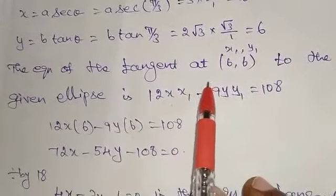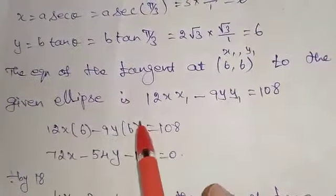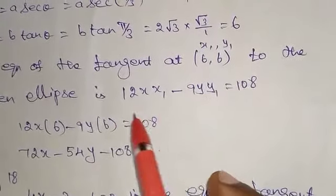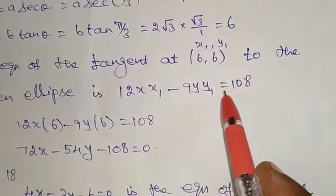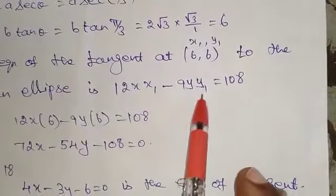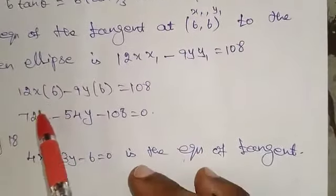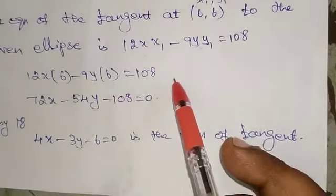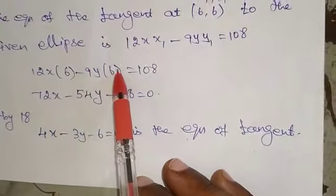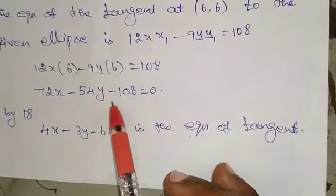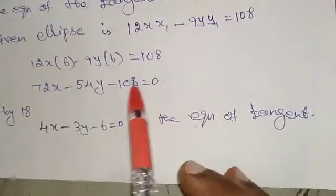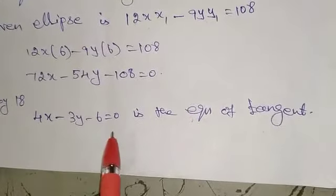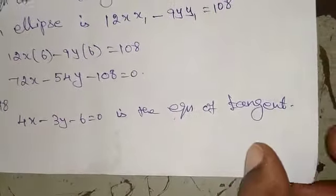The equation of the tangent at point (6, 6) to the hyperbola is 12xx₁ minus 9yy₁ equals 108. Substituting x₁ equals 6, y₁ equals 6: 12x(6) minus 9y(6) equals 108, giving 72x minus 54y minus 108 equals 0. Dividing by 18 gives 4x minus 3y minus 6 equals 0. This is the equation of the tangent.